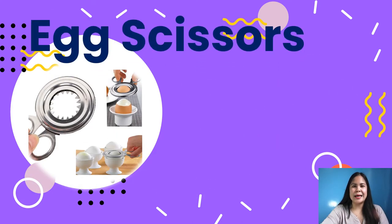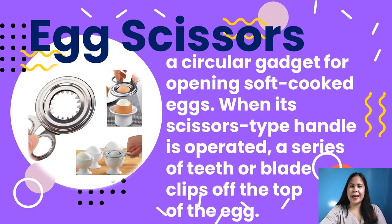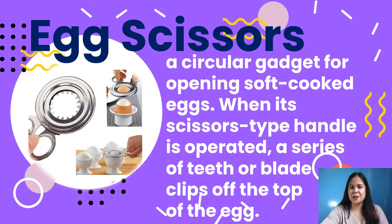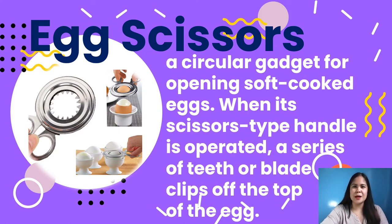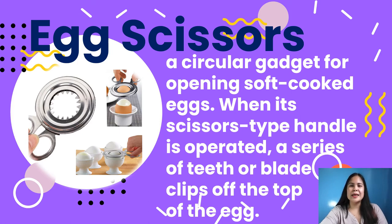Another tool is an egg scissor — a circular gadget for opening soft-cooked eggs. When its scissor-type handle is operated, a series of teeth or a blade clips off the top of the egg. It is positioned over the top of the egg, and when the handle is operated, a ring of teeth or ring blade clips off the top third of the eggshell. It is used to cut off the top of soft-boiled eggs in the shell.